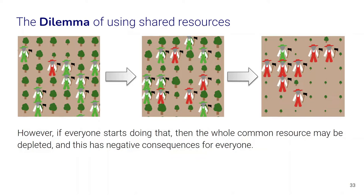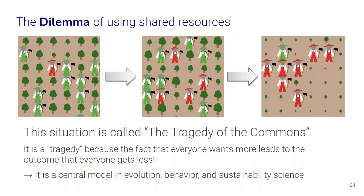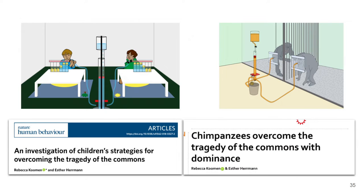Over time, though, if everybody starts doing that, the whole common resource may be depleted, with negative consequences for everyone. This situation — a special type of social dilemma — is often called the tragedy of the commons. It's a tragedy because the fact that everyone wants more leads to the outcome that everyone gets less. This is a very important model in sustainability science, but also in evolutionary and behavioral science, as we try to think about ways to solve this tragedy. The cooperation experiments with children and chimpanzees were actually designed to represent the situation of shared common pool resource use and to look at how children and chimpanzees solve or overcome this tragedy of the commons.